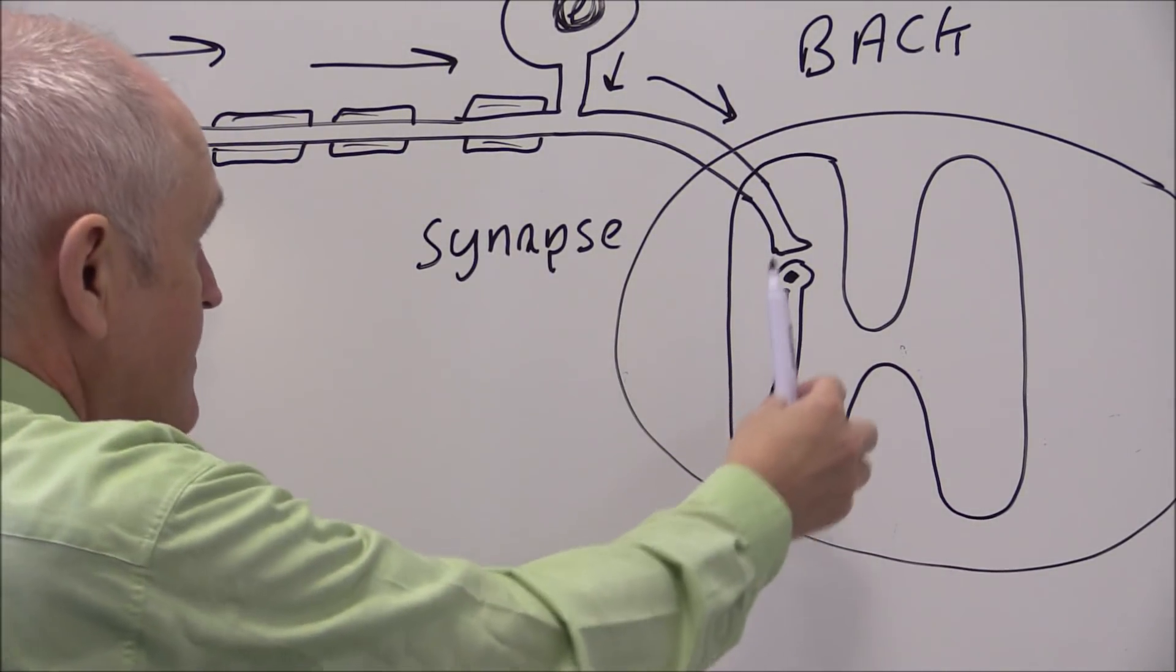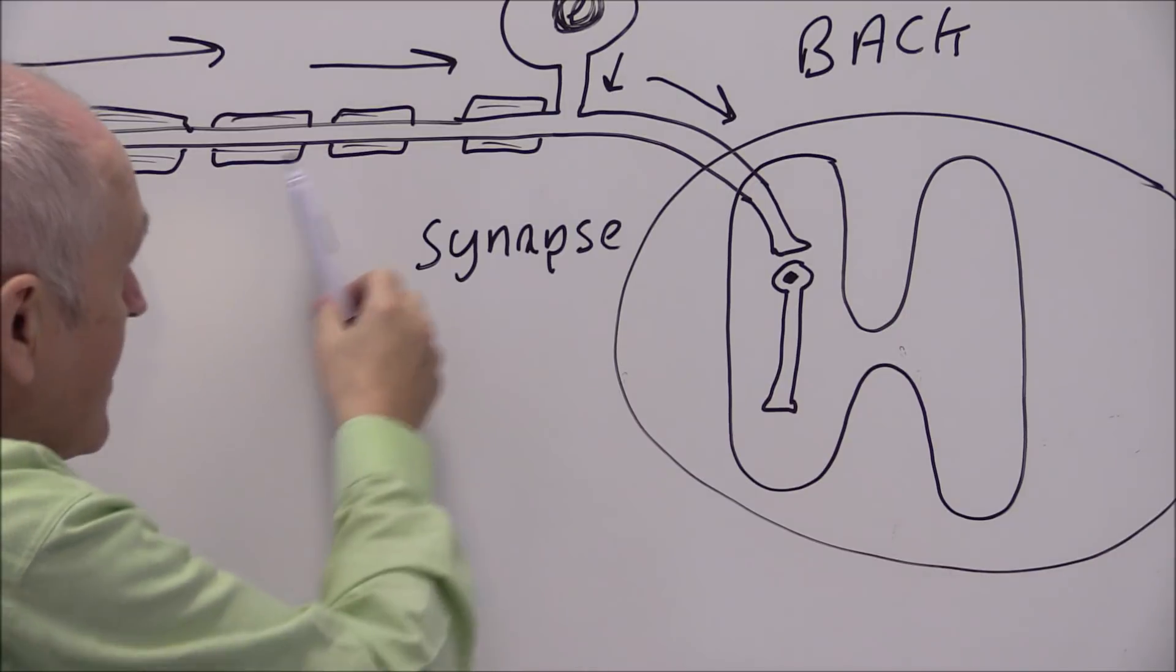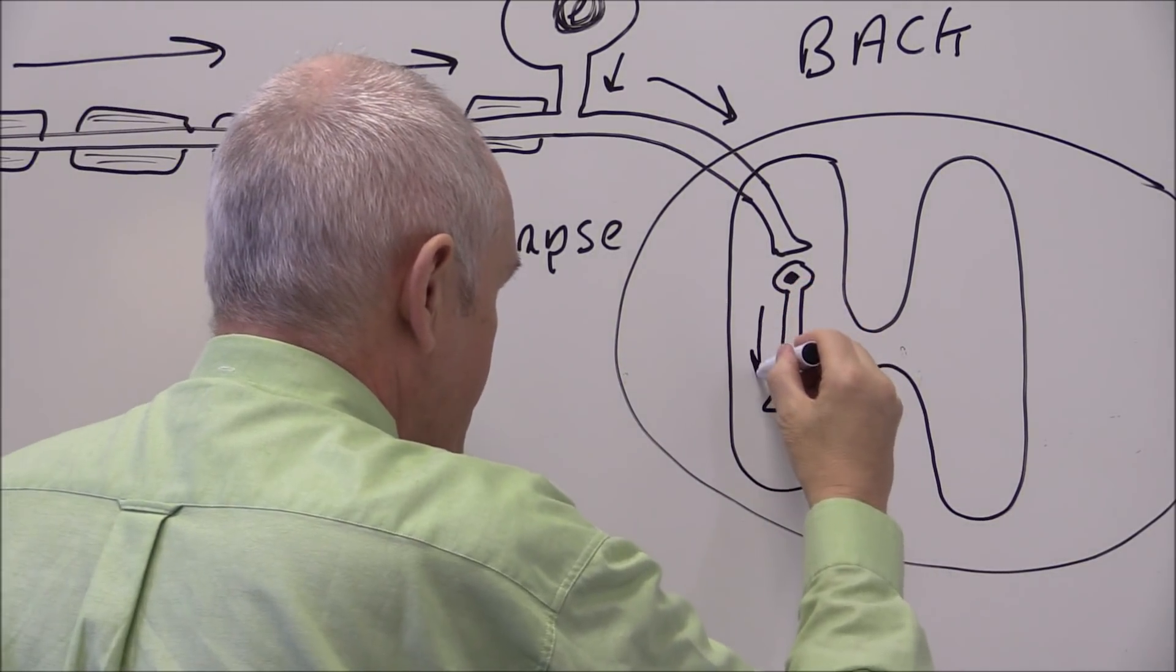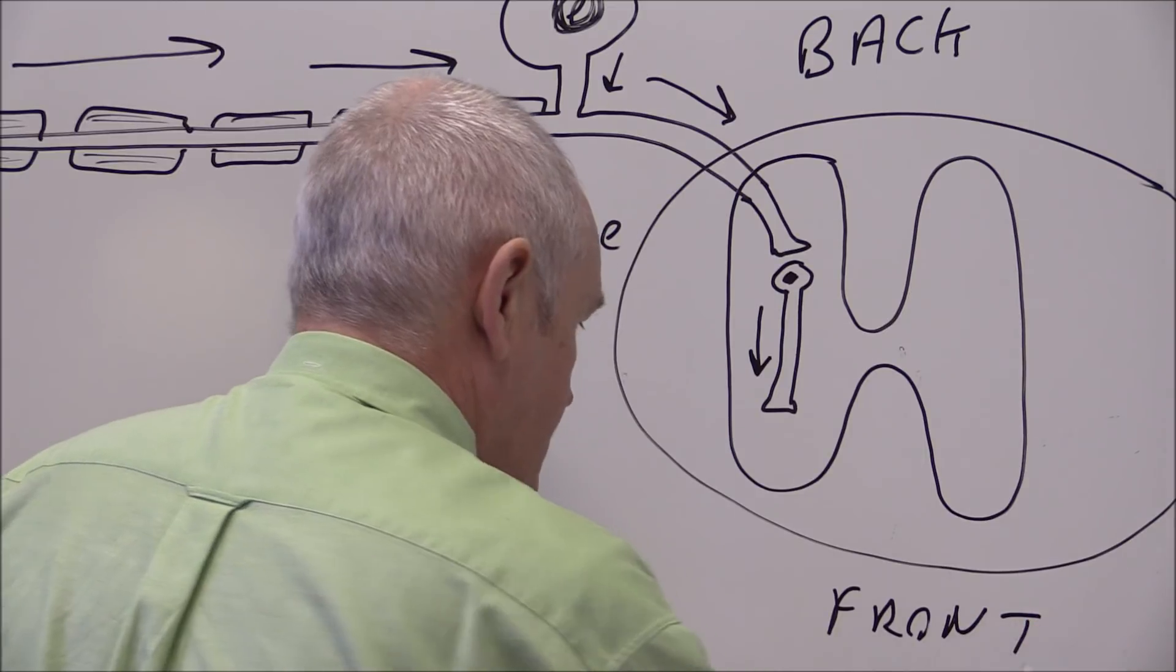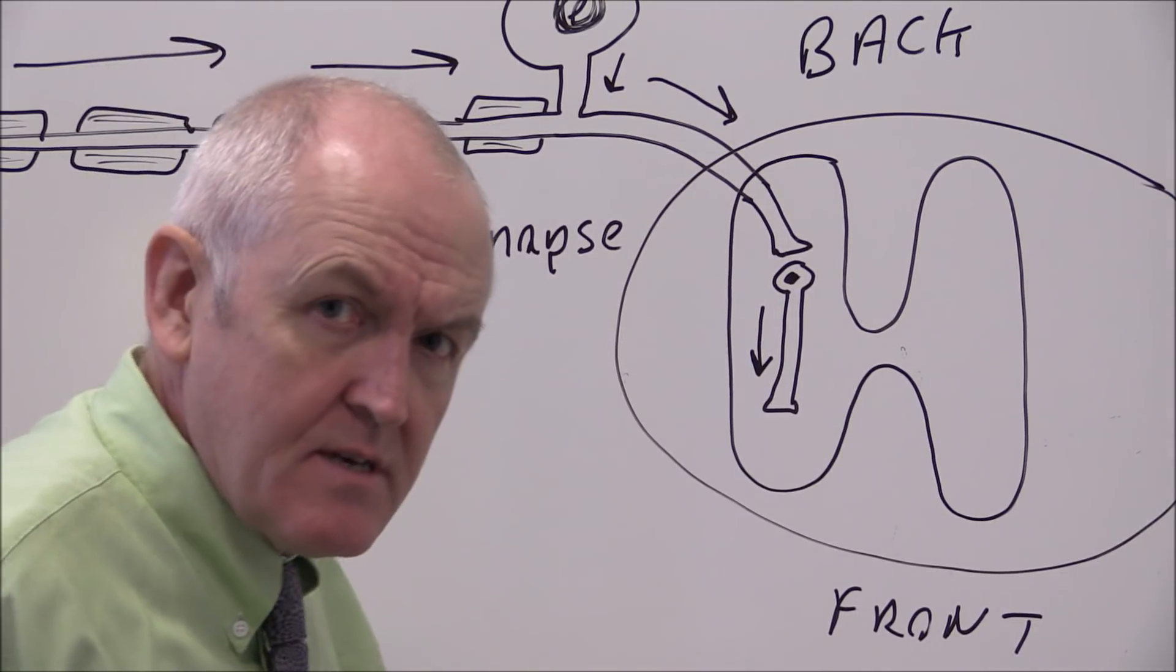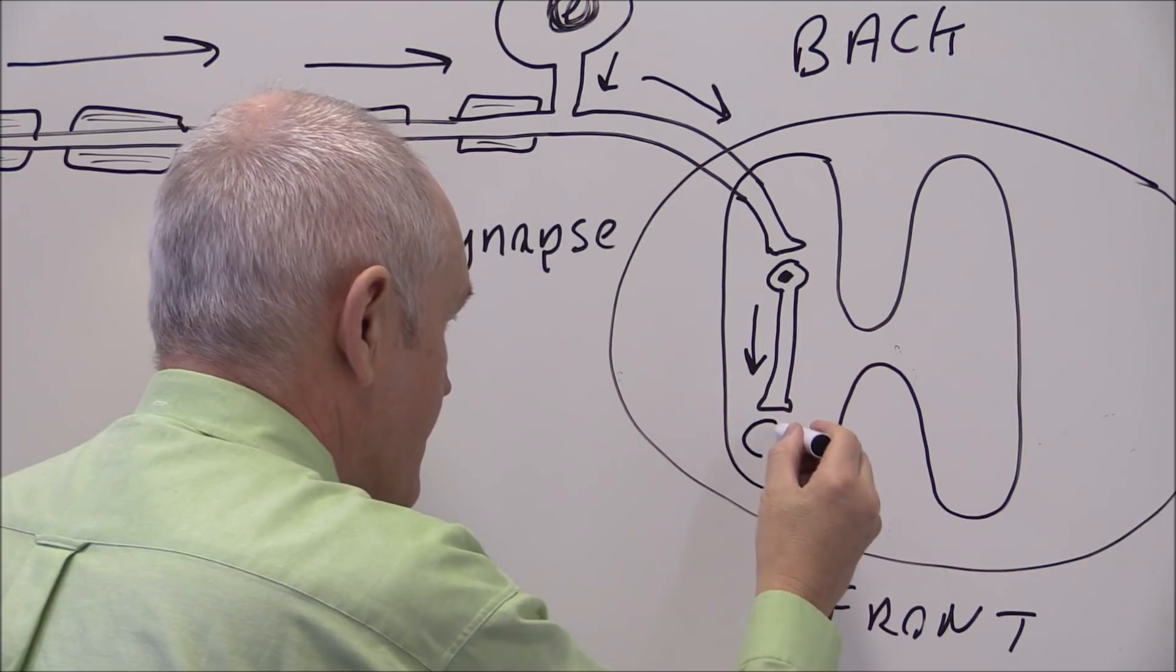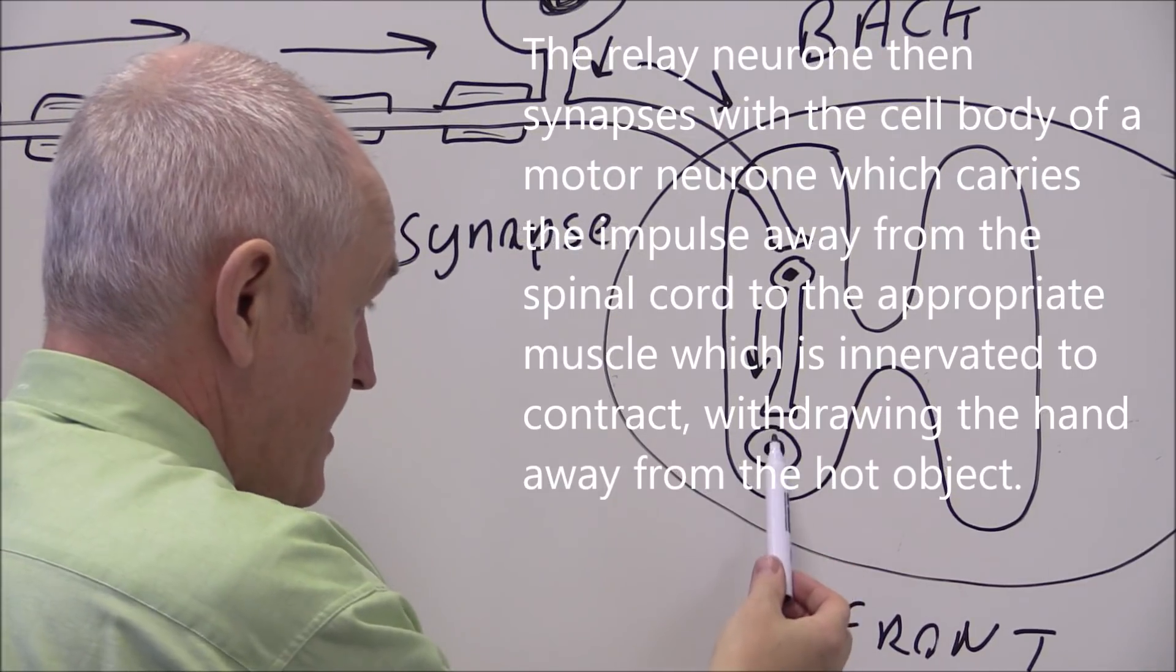So the impulse has come along here. Suppose we touch something really hot and we want to withdraw our hand. The impulse goes along the axon of the sensory neuron, synapses with the relay neuron, and then the impulse travels through the grey matter and it reaches the front. So this is the ventral surface or the anterior surface of the spinal cord. And here there is the cell body of a motor neuron, just there. Again not touching. There's a physical gap called the synapse.